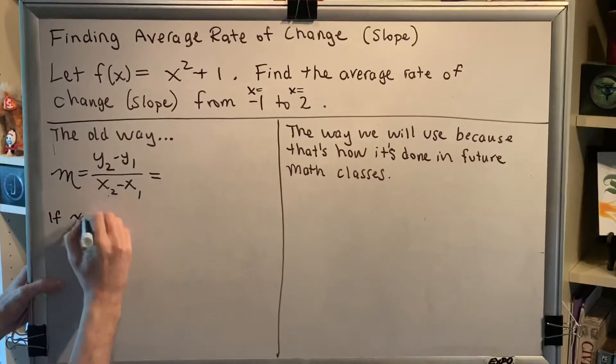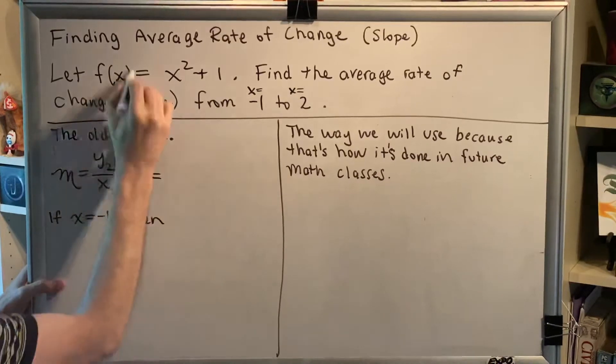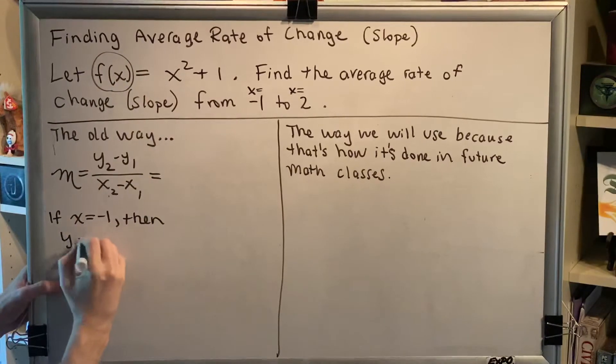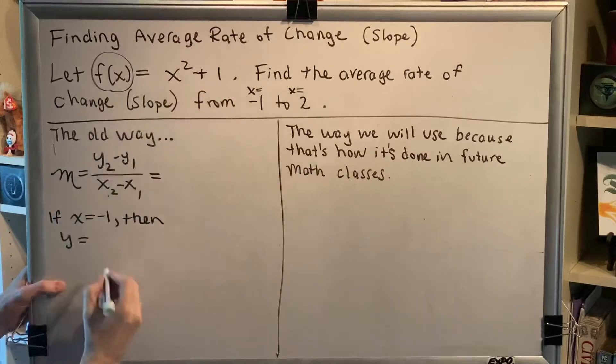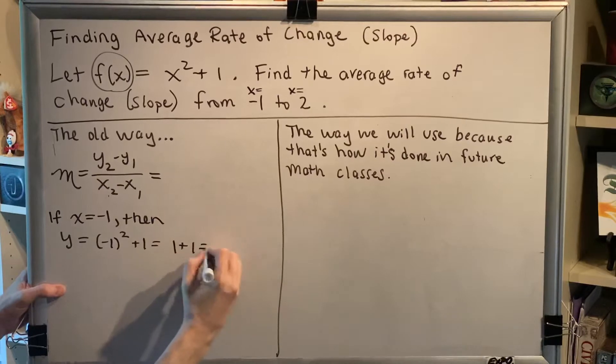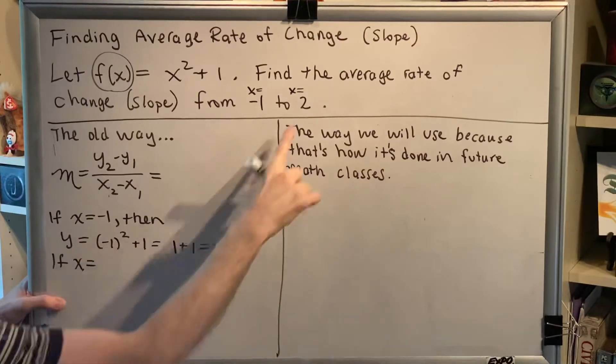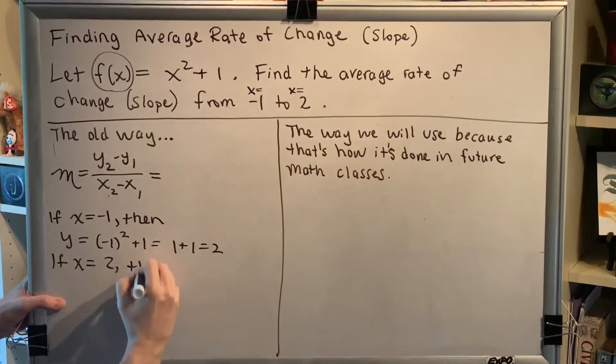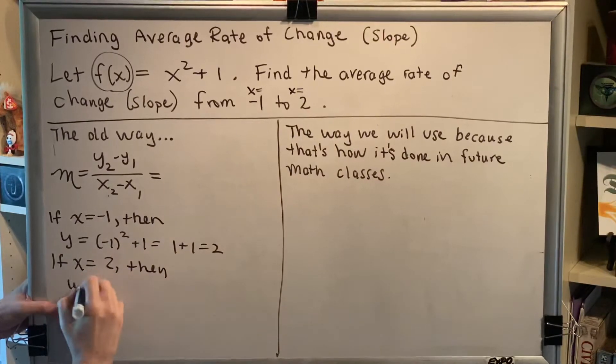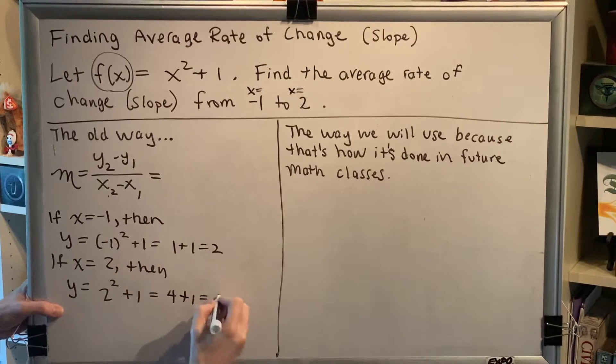So for example, if x equals negative 1, then f of x or y would be equal to x squared plus 1. So we get negative 1 squared plus 1, which is 1 plus 1, which is 2. If, however, x is equal to 2, then we would have y is equal to 2 squared plus 1, which is 4 plus 1, which is 5.